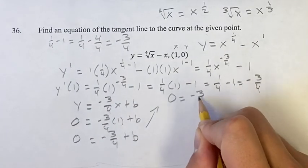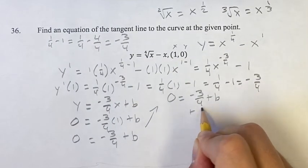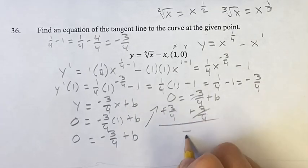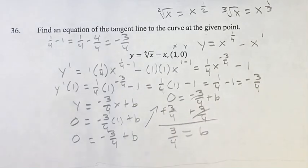Just rewriting this so we have room. We can add three-fourths to both sides. These will cancel and get b equals zero plus three-fourths is just three-fourths.